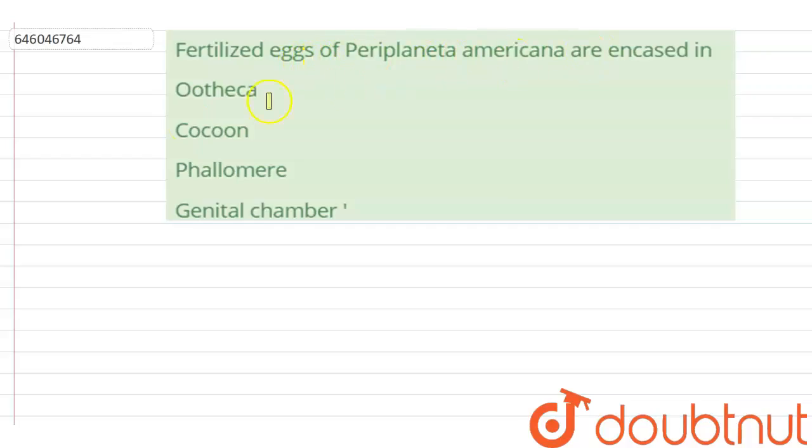The options are: Ootheca, Cocoon, Phallomere, Genital chamber.